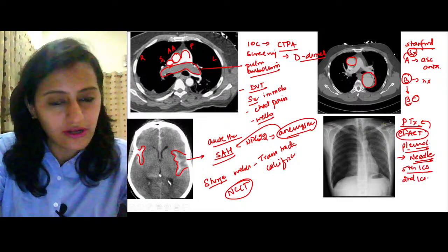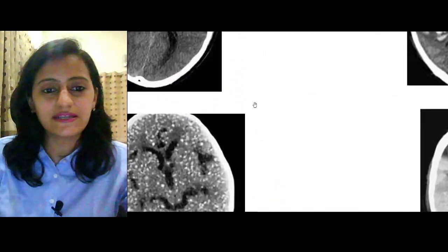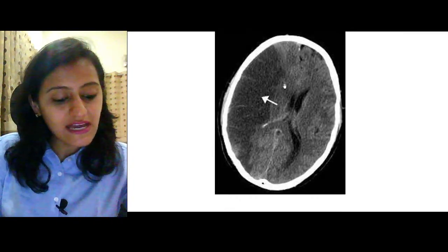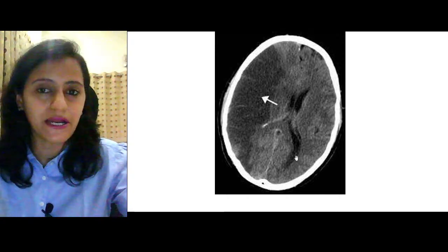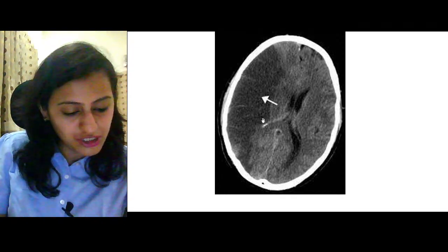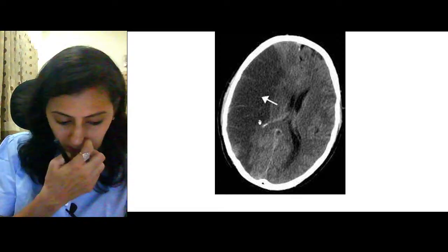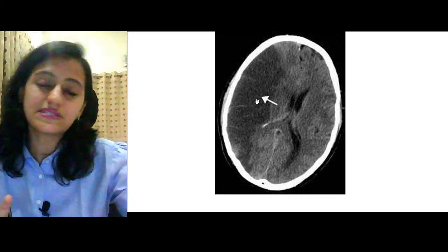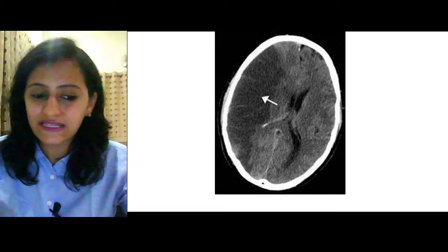Let's go to neuroradiology. IVH — intraventricular hemorrhage — is within the ventricles, it is the last stage of subarachnoid hemorrhage. In stroke, after CT the next step is CT angiography; if CT angio is in the options go for CT angio, if not then MRI.